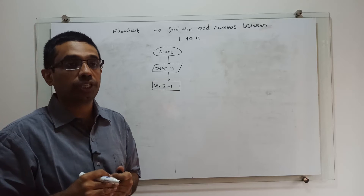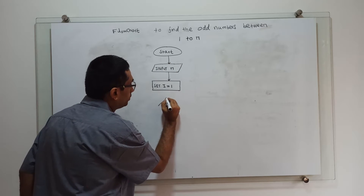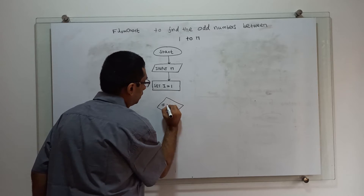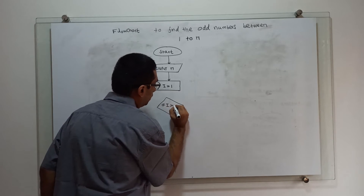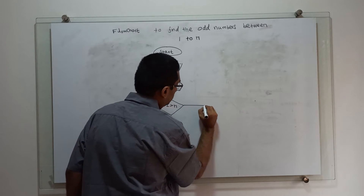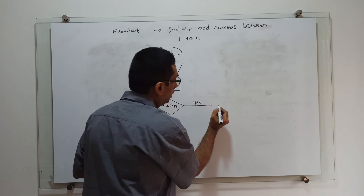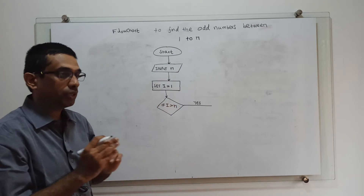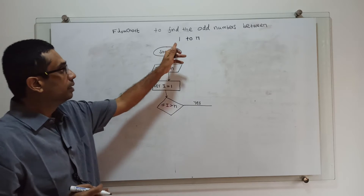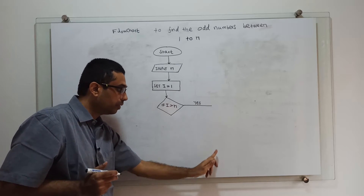Next, I am writing the loop to check whether the values are between 1 to n. I am using a decision symbol: if i is greater than n. If yes, the flow will go to the end of the flowchart — I will connect it to the stop symbol. If i exceeds n, it means i is out of the range 1 to n, so I will finish it at the end of the flowchart.